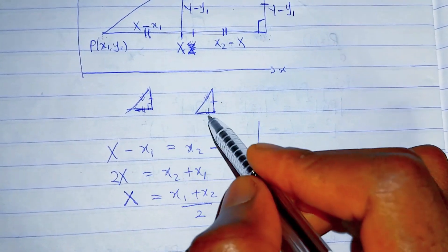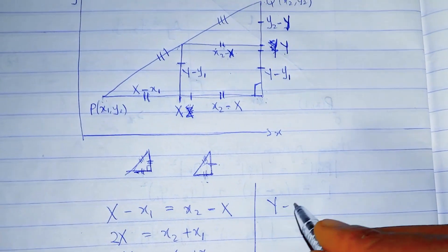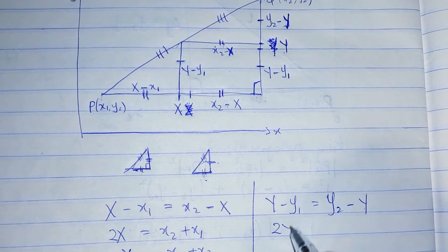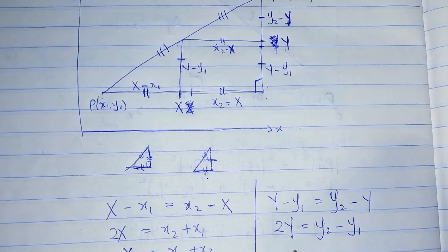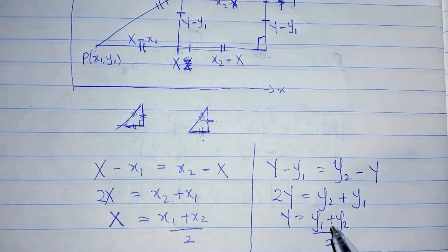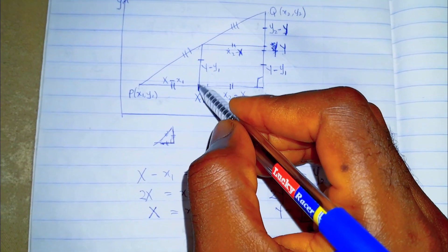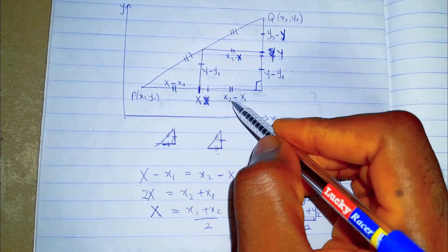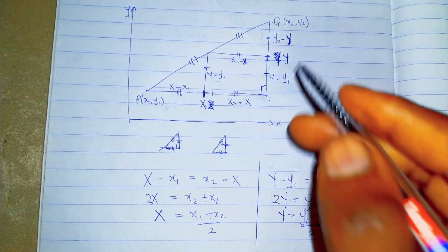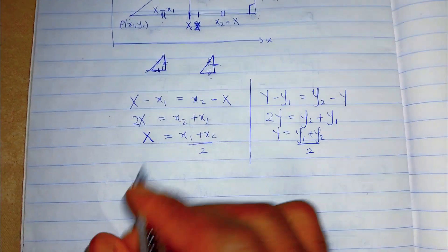For y, the same process applies. Since the corresponding sides are equal, y minus y1 equals y2 minus y. This becomes 2y equals y2 plus y1. Finally, y equals (y1 + y2) / 2. That gives the midpoint for the y-coordinate. So we have derived the complete midpoint formula.